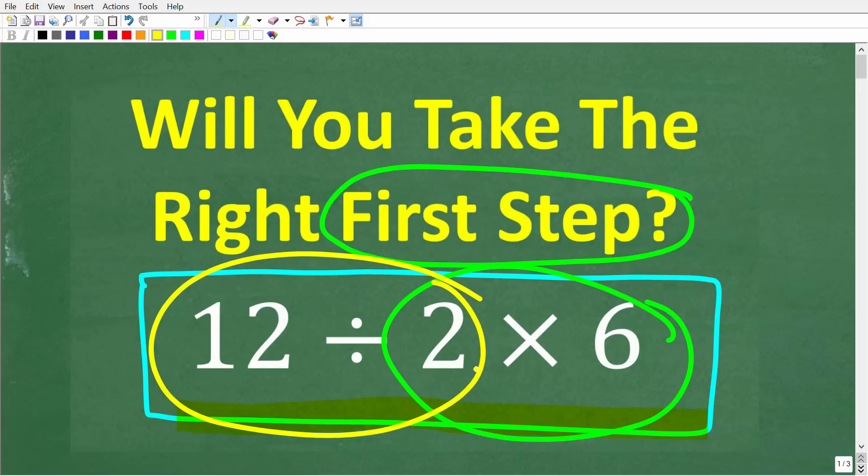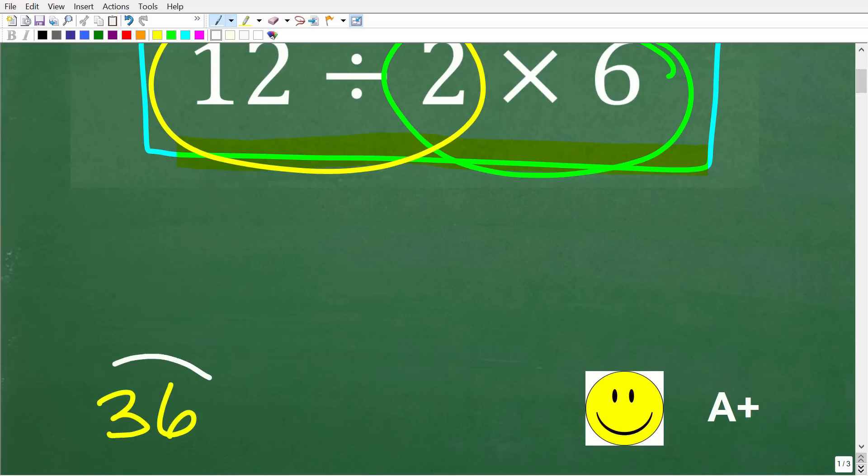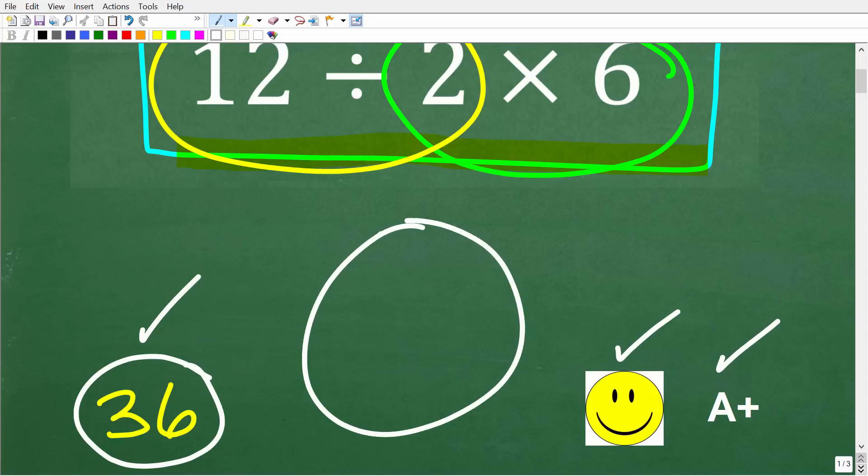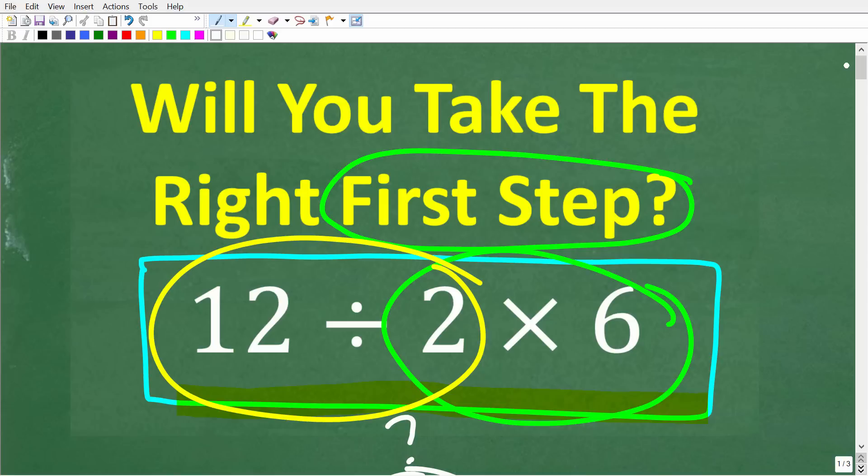Okay so 12 divided by 2 times 6, what is the correct solution? Well the right answer is 36. Now if you got that right, well you definitely get a happy face and an A plus. If you're like I missed you to math man, I must be very bad in math because I couldn't even solve this simple math problem.